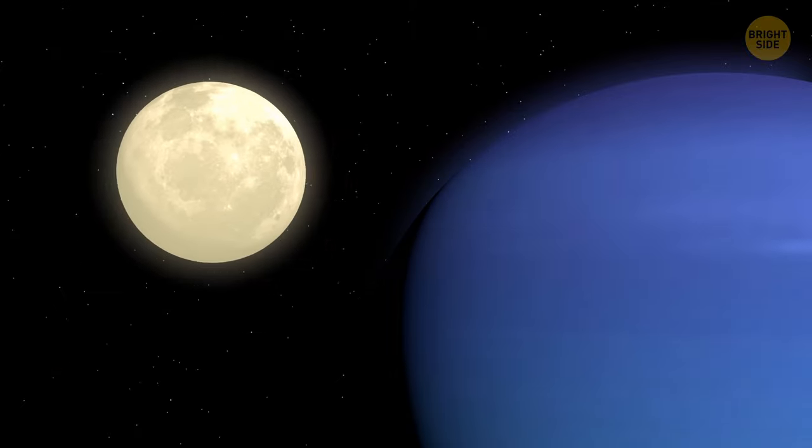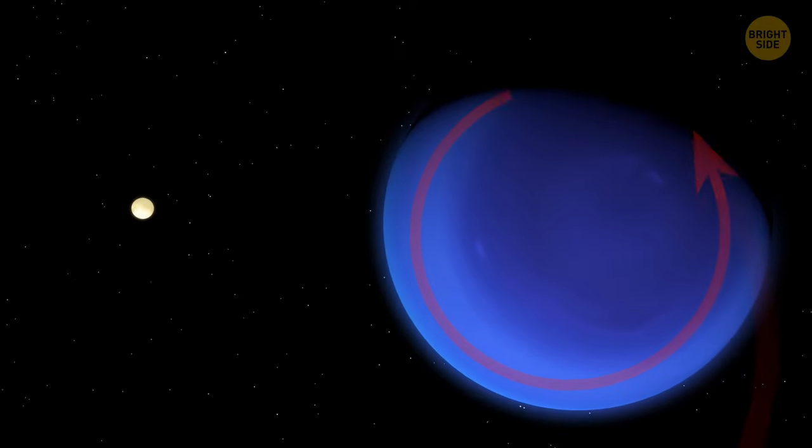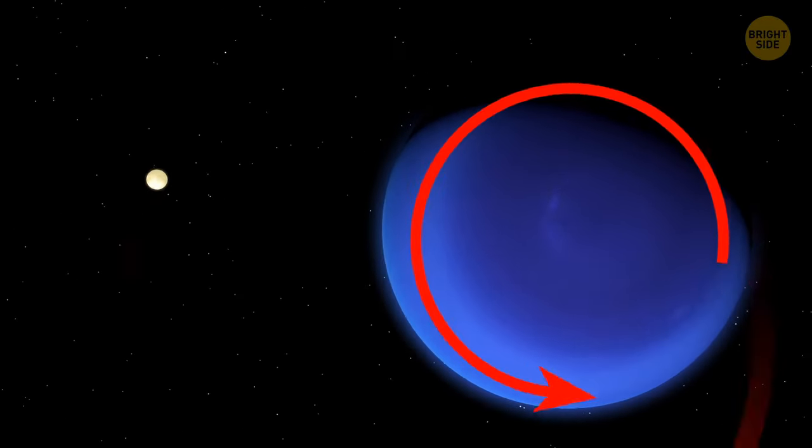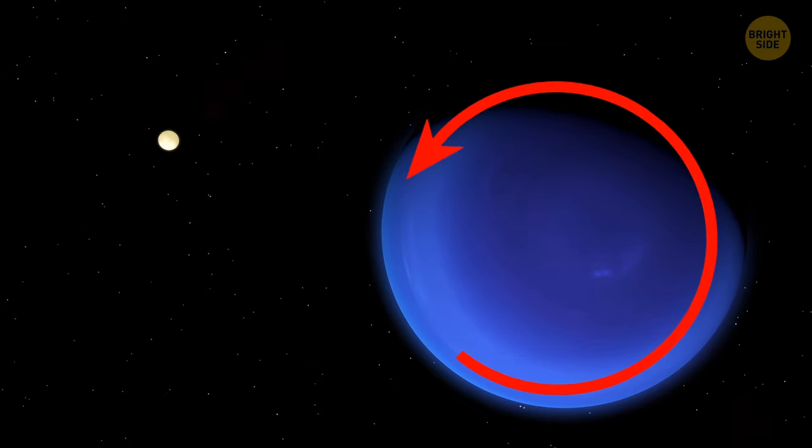Triton, a Neptune's moon, orbits the planet in a backwards motion. It's the only moon that does so, and nobody knows why.